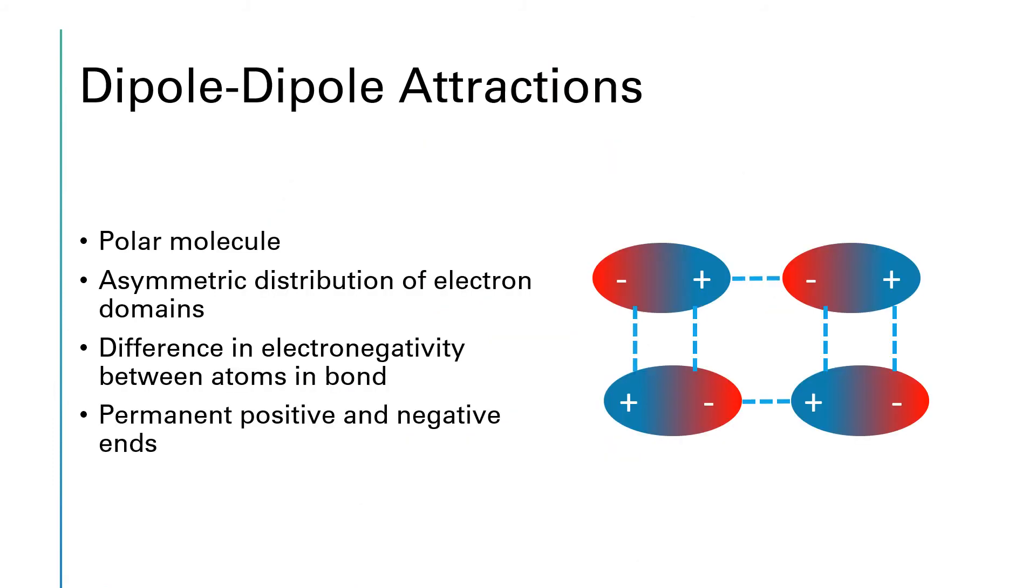The next type of intermolecular force that we're going to look at is known as dipole-dipole attractions. Dipole again just refers to a polar molecule where we have a permanent asymmetric distribution of the electrons so that there is a permanent positive and negative end to the molecules. In the solid form, as this molecule crystallizes, the molecules tend to line up to maximize that attractive interaction between the positive end of one molecule and the negative end of another molecule. So when you have polar molecules, they can attract each other with these dipole-dipole interactions.